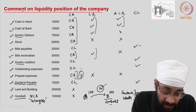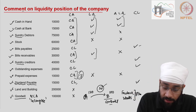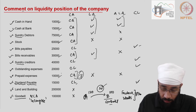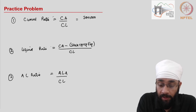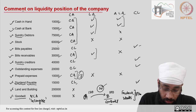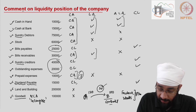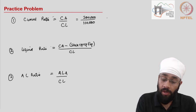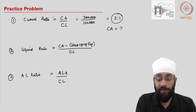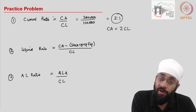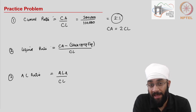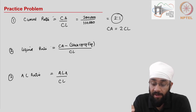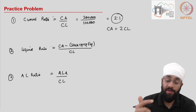Now all we have to do is sum these up and calculate the ratios. The total of current assets comes to 2 lakhs. Dividing by current liabilities — which total 1 lakh — the current ratio comes out to 2:1. This means current assets are twice the size of current liabilities, so the company can afford to lose half its current assets and still pay its current liabilities. It is a good position to be in, even without an industry benchmark.